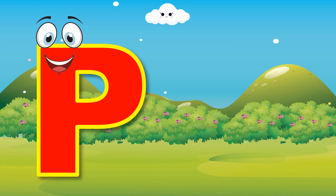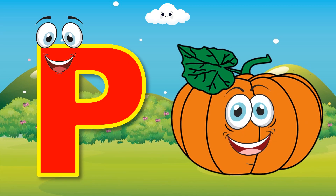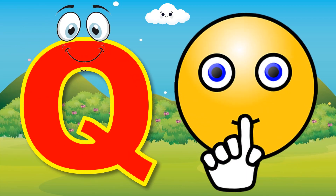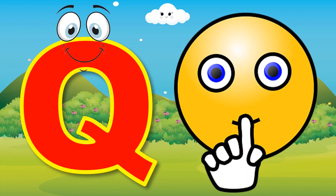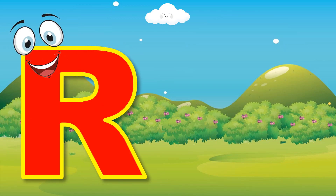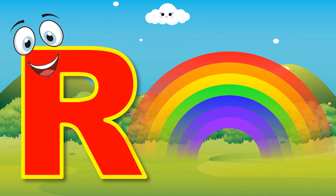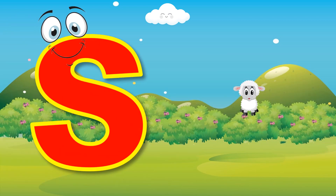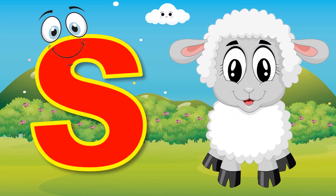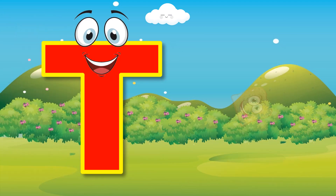O for Ostrich. P for Pumpkin. Q for Quiet. R for Rainbow. S for Sheep.